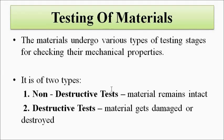Then, the testing of materials. The materials being considered for various engineering applications undergo various testing stages to check their mechanical properties such as stress, strain, tensile strength, ductility, malleability, toughness, and hardness. Broadly, we can divide these tests into two categories: non-destructive tests and destructive tests. In non-destructive tests, the material being tested does not get damaged — it remains intact.